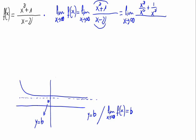And we have x squared plus 1 divided by x squared divided by x minus 2 divided by x squared. This equals 1 plus 1 divided by x squared on the numerator, and on the denominator, it would be 1 divided by x minus 2 divided by x squared.